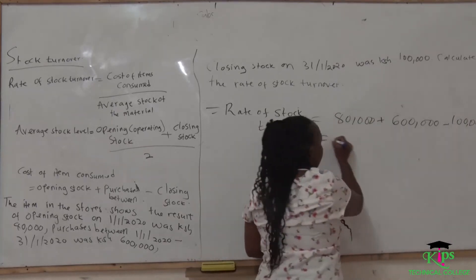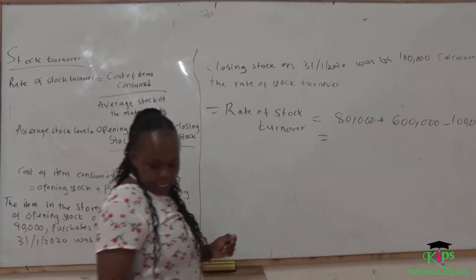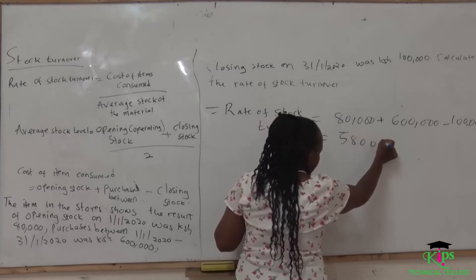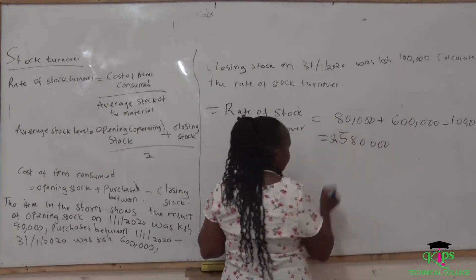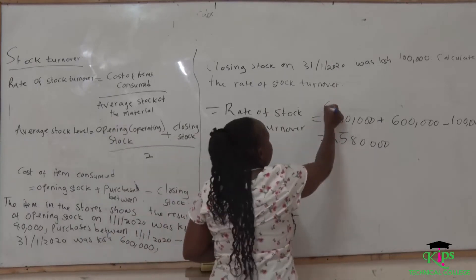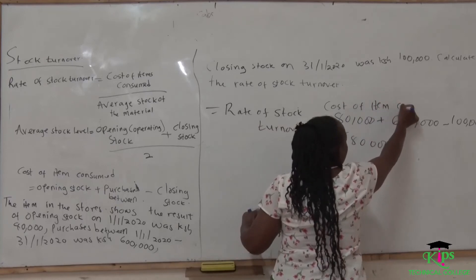When we did that, you get $580,000. This is cost of item consumed.